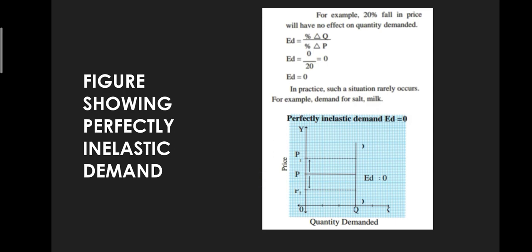Ed = percentage change in quantity demanded / percentage change in price. Since there is no change in quantity demanded, Ed = 0 / 20 = 0. This proves that elasticity of demand is equal to zero. In the diagram, on the OX axis is quantity demanded and on the OY axis is price.